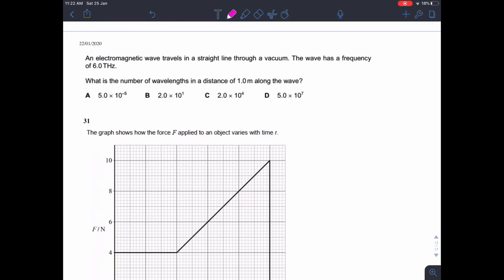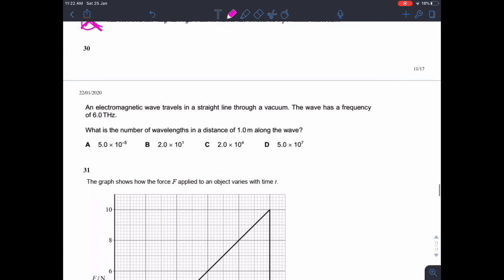An electromagnetic wave travels in a straight line through a vacuum. The wave has frequency of 6 terahertz. So f equals 6.0 times 10 to the 12. What is the number of wavelengths in a distance of one meter? Okay, so an electromagnetic wave, we know that the speed of the electromagnetic wave is 3 times 10 to the 8. That's from your data booklet as well, if you can't remember that. And c equals f lambda. And so the wavelength is c divided by f. But we want the number of wavelengths in a distance of one meter. This is giving the distance in meters of one wavelength. So we need to do one divided by lambda. So one divided by lambda is the answer, which equals f divided by c. And f divided by c, if you put that into your calculator, 6 times 10 to the 12 divided by 3 times 10 to the 8, it gives you C, 2 times 10 to the 4.